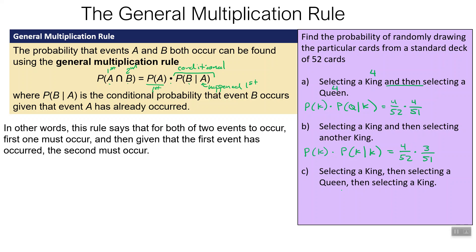What's the probability of selecting a king, then a queen, then another king? We want P(king) × P(queen | king) × P(king | king and queen already drawn). The first king is four out of 52. The queen: four queens remain, 51 cards left. Now for the second king: we've taken out a king already, so three kings remain, and with two cards removed there are 50 left. We multiply all three fractions together because we want one thing and another thing and another.